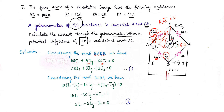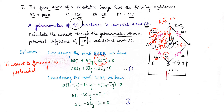We choose a clockwise pre-decided loop direction. The currents I1 and Ig flow in the same clockwise direction so they are positive. Current I2 flows in the opposite direction, so it is taken as negative. The sign convention is: if current flows in the pre-decided loop direction it is positive; otherwise it is negative.